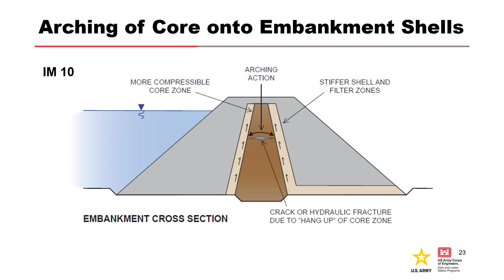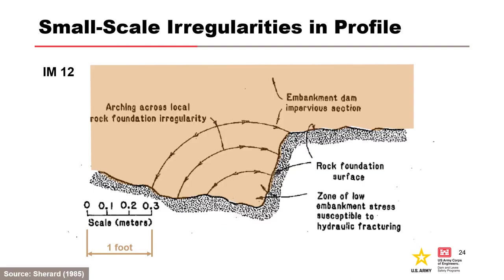For IM-10, vertical stresses in the core zone can be reduced due to arching between outer shell zones with a higher modulus. This is most likely for cores with a very narrow width and for soils subject to collapse compression on saturation — for example, poorly compacted soil placed dry of optimum moisture content. IM-12 is for small-scale irregularities in the foundation of the core. For cracking or low stresses to occur, the irregularities need to be persistent over most of the distance across the core with steps greater than approximately 3–5% of the embankment height.